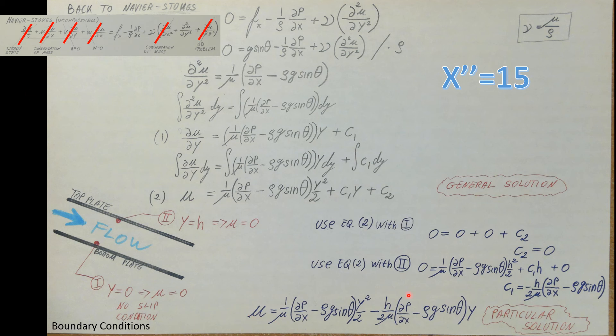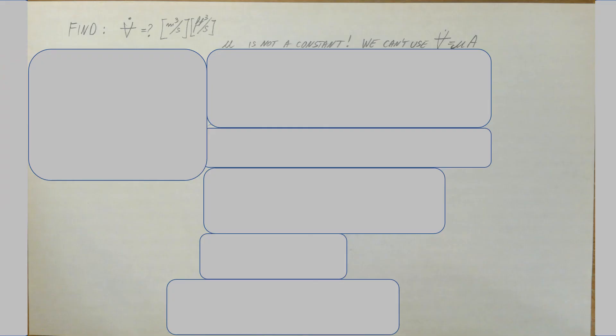Plugging C1 and C2 back into the general solution gives us our particular solution — our velocity profile. If they had asked us to find the velocity profile, mission accomplished. But they asked us to find the volumetric flow rate, so let's continue.